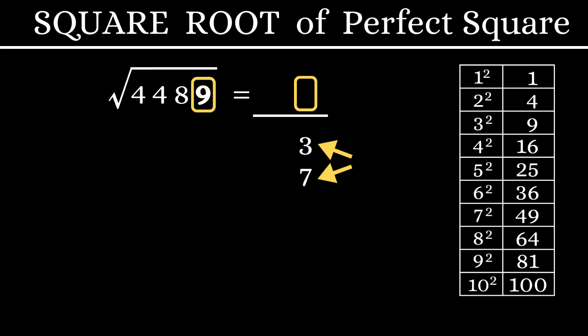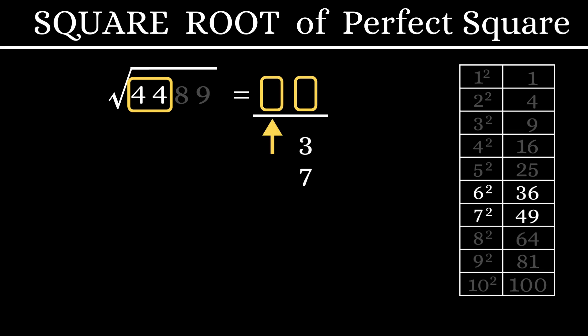Once this step is done, we will be ignoring the last two digits of our question. Leaving out 89, we are left with the number 44. Take this 44 and find out where this 44 lies among these numbers. We can say it falls between 36 and 49, which is 6 squared and 7 squared. The tens digit of our answer will definitely be the smaller one, which is 6.